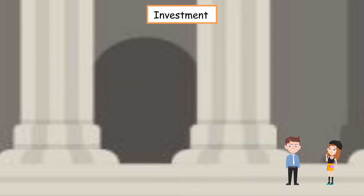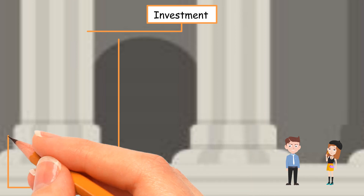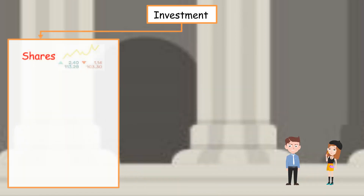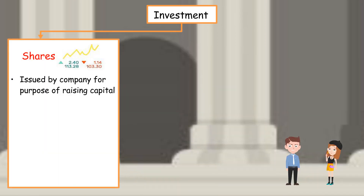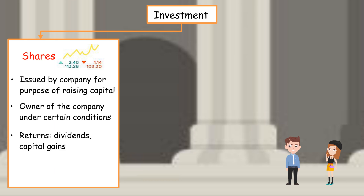First, shares. Shares are issued by a company for purposes of raising capital. A person purchases shares from a company and becomes an owner of the company under certain conditions. Shareholders will receive dividends and capital gains as returns.